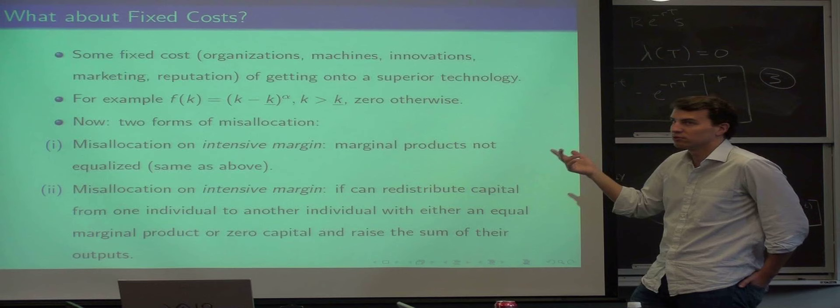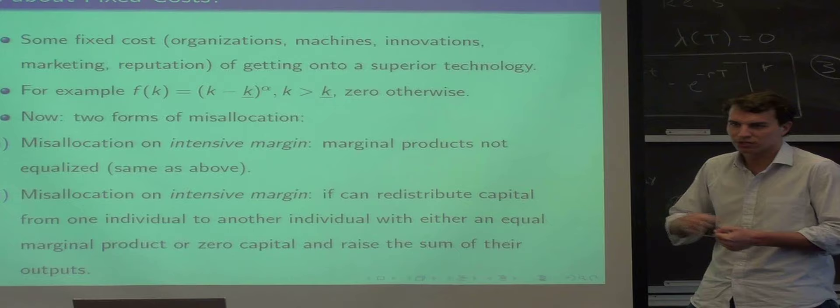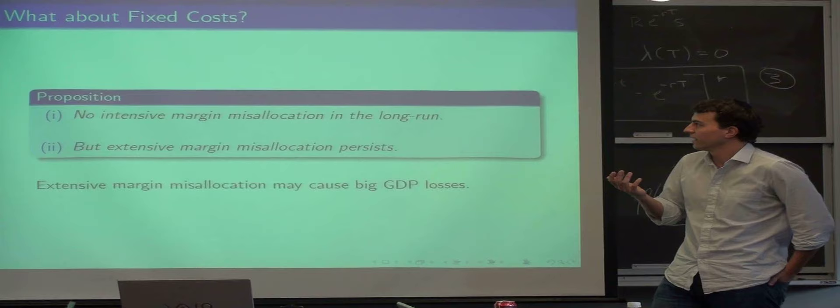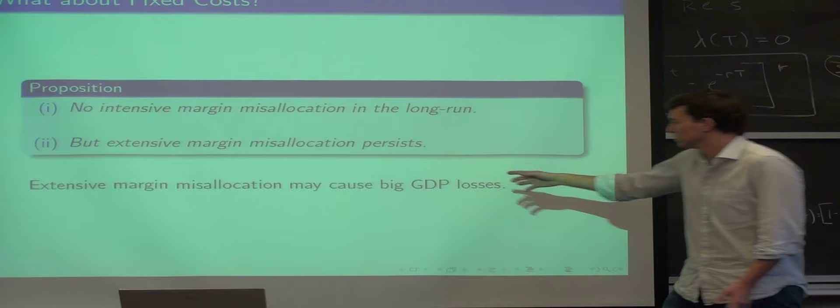If you have fixed costs of starting up a firm, there's going to be a bunch of people who think they're not going to be productive enough to recoup the fixed costs, so they won't produce at all. And there's going to be a bunch of other people who are going to produce. Now you're actually going to have two forms of misallocation. One is what we call misallocation on the intensive margin, which is that marginal products aren't equalized. Misallocation on the extensive margin means that the wrong people are in business. Can you still get this persistent misallocation that we observe in the data? The answer is both yes and no.